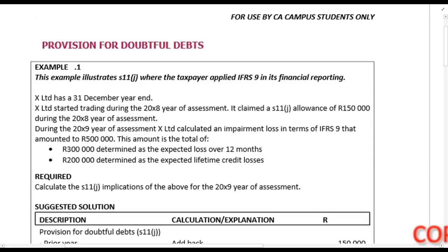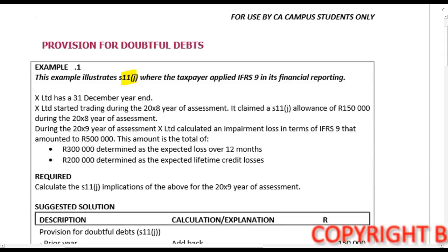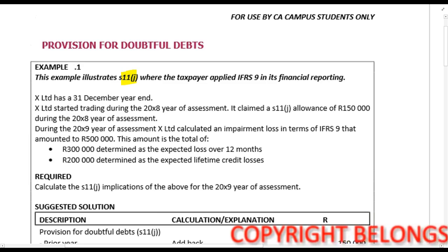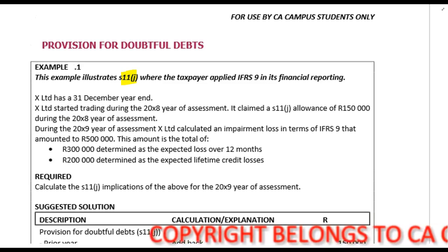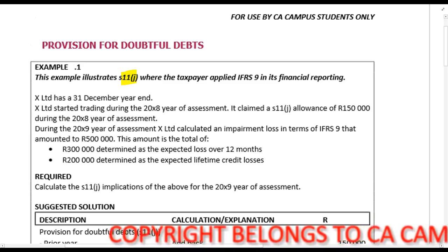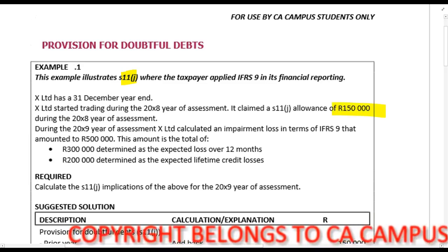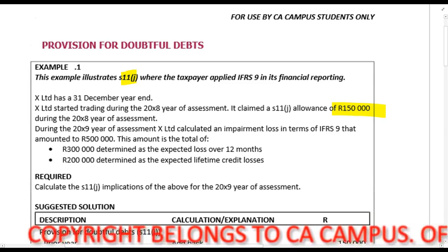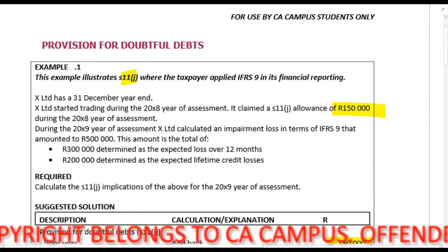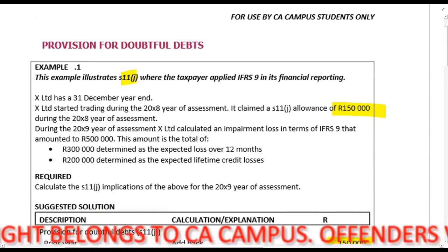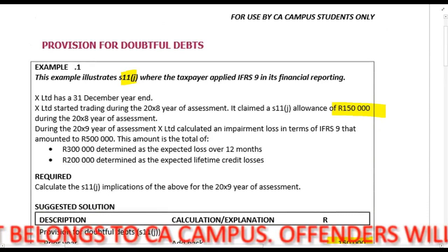In our next example we are looking at the provision for doubtful debts under section 11j. X Limited has a 31 December year-end. X Limited started trading in the 20x8 year of assessment and claimed a section 11j allowance of 150,000 rands. That prior amount must be added back to income during the 20x9 year of assessment.